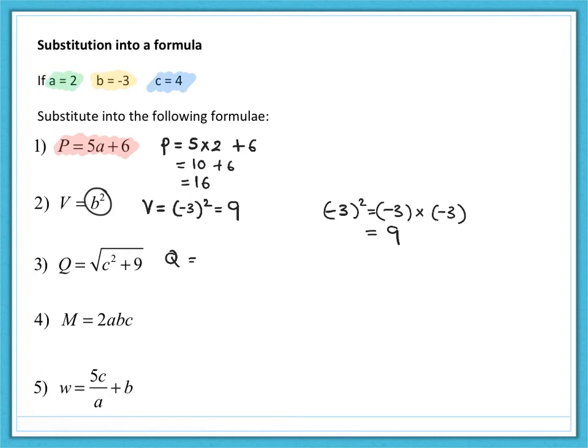Number three, q is equal to the square root of c squared plus nine. Well, that's four squared plus nine. So that is the square root of 16 plus nine. Remember, we've got to do this part here under the square root sign, which means we square four first to give us 16 and then add the nine and then square root. So that's the square root of 25, which we can say is five.